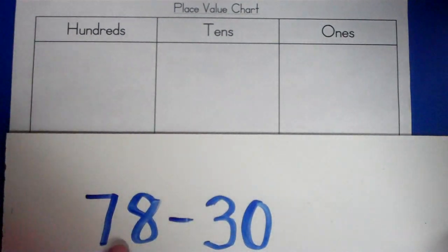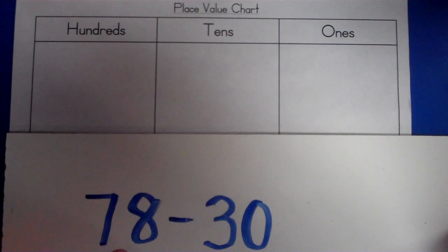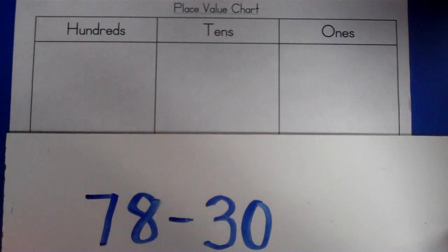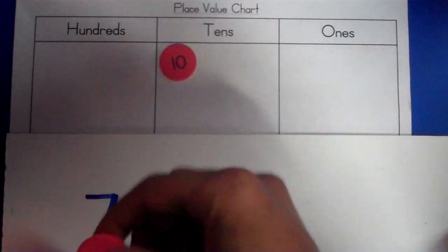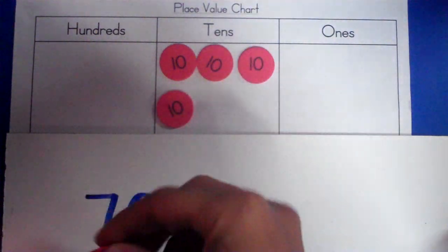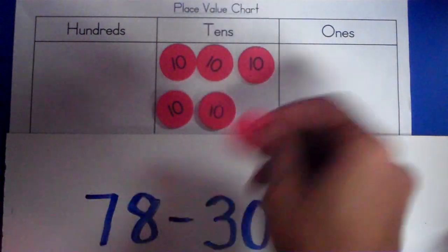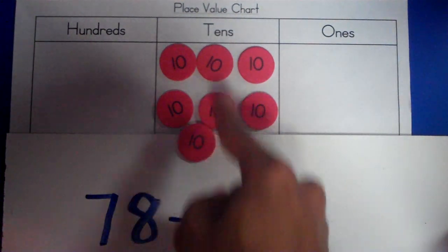So, this problem is telling us to start out with seven tens, eight ones. Let's do that. Seven tens, eight ones. One, two, three, four, five, six, seven. Seven what? Seven tens.